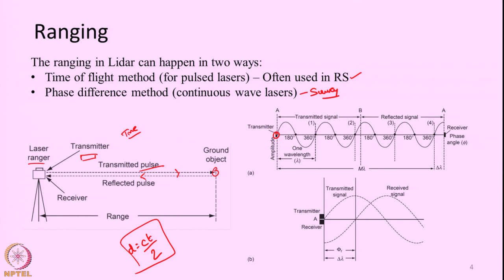In the continuous beam case, we combine the laser wavelength with a carrier wave, transmit it, and it goes and comes back. Based on the distance between the transmitter and receiver, the phase of the wave will vary. We know the phase at which it is transmitted, and based on the distance the phase will change.